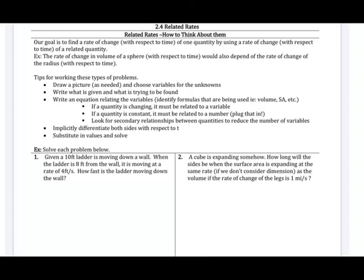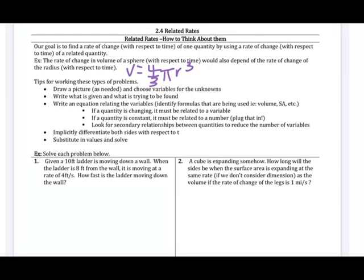Our goal with related rates is to find the rate of change with respect to time of one quantity by using other related quantities. For example, we could talk about the rate of change of the volume of a sphere with respect to time, which depends on the rate of change of the radius. Differentiating with respect to time gives us dv/dt and dr/dt — the rate of change of volume depends on the rate of change of the radius.